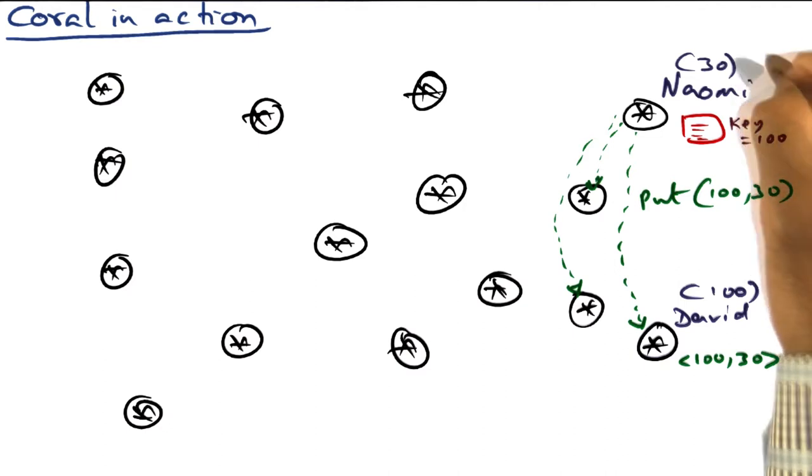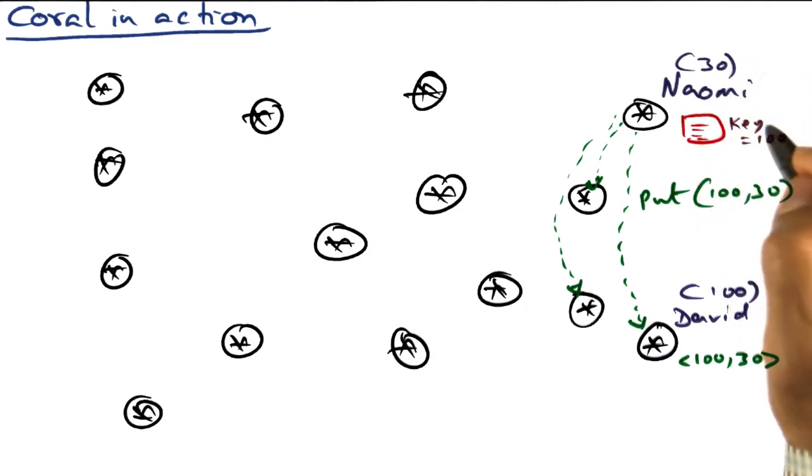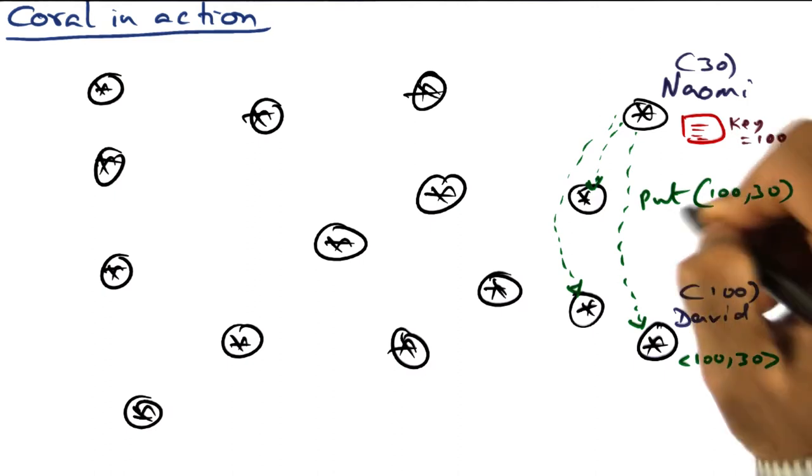Let's say Nomi, who's at node number 30, has some interesting content and she wants to share it with the world. So what she does, she creates a unique signature, a key, for this content by hashing it. And let's say that the key that she generated for this content is 100.